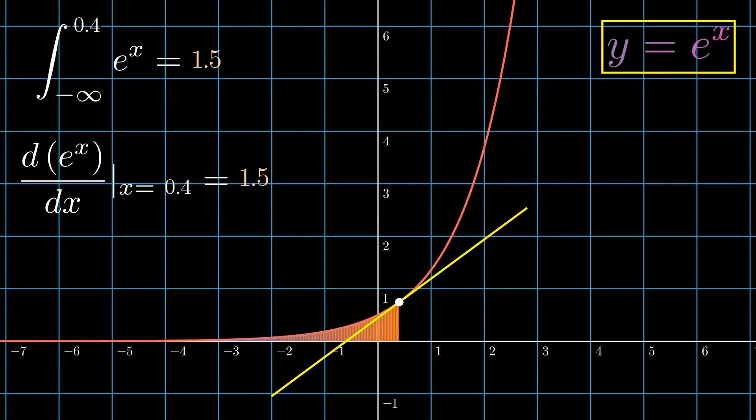And a special case is that the derivative at x equals 1 and the area under the curve from negative infinity to 1 are both equal to e.